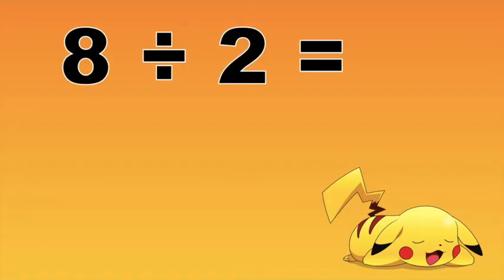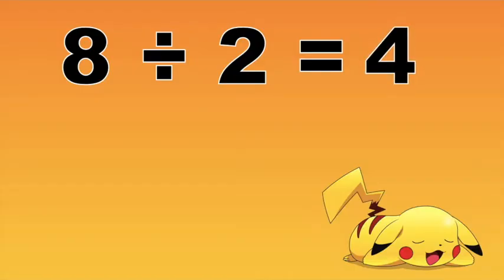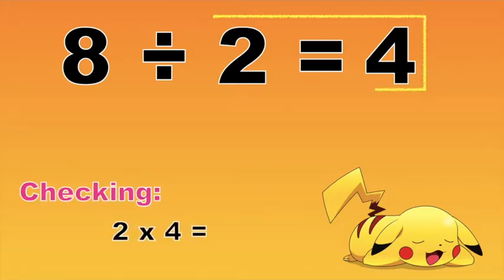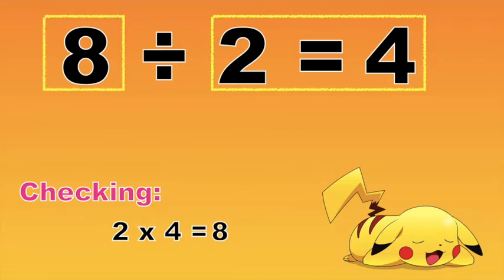I have here 8 divided by 2 equals blank. What will be the answer? Very good! That is 4. To check if our answer is correct, we need to multiply 2 and 4. 2 times 4, that is equal to what? Very good! That is 8.